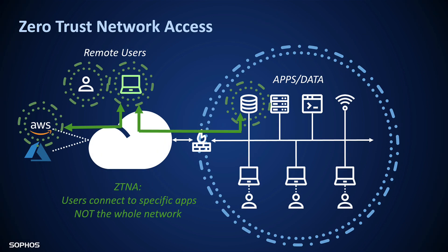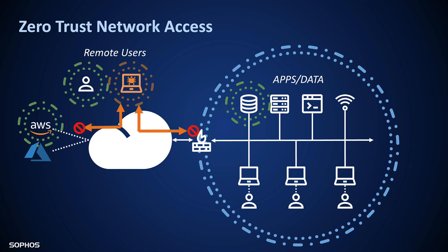With Zero Trust Network Access, remote workers are no longer implicitly trusted. They and their device have to earn trust constantly. Another fundamental difference is that ZTNA only connects a user to a very specific application or system, not the whole network. In this example, a remote user can access an application in AWS and another on the corporate network, but nothing else. If a device becomes compromised by an attack, policy can prevent it from connecting to corporate networked applications and data, effectively preventing lateral movement and attacks from getting a foothold on the network.